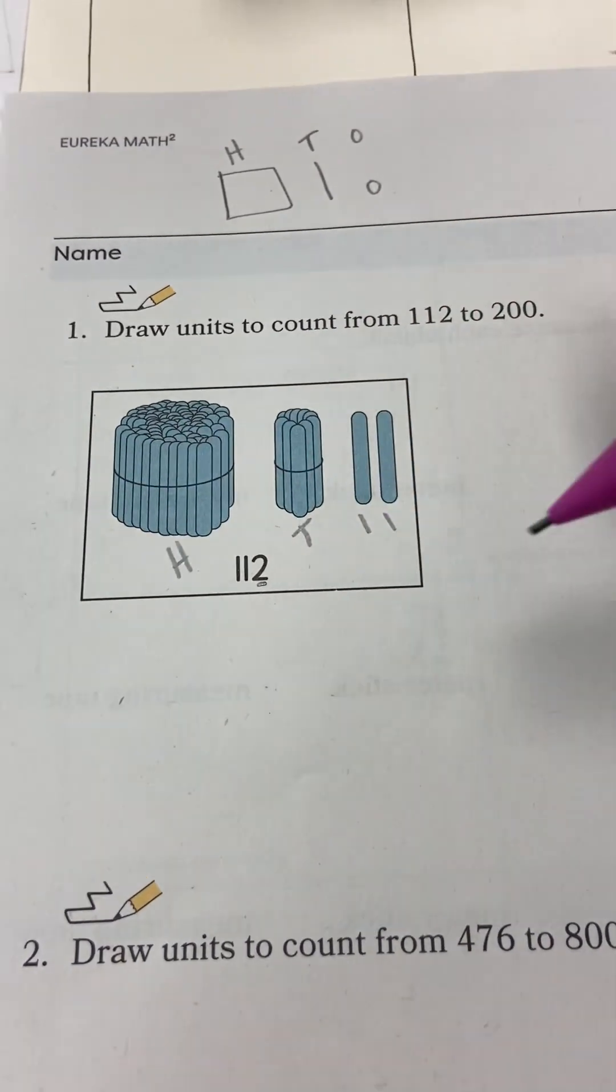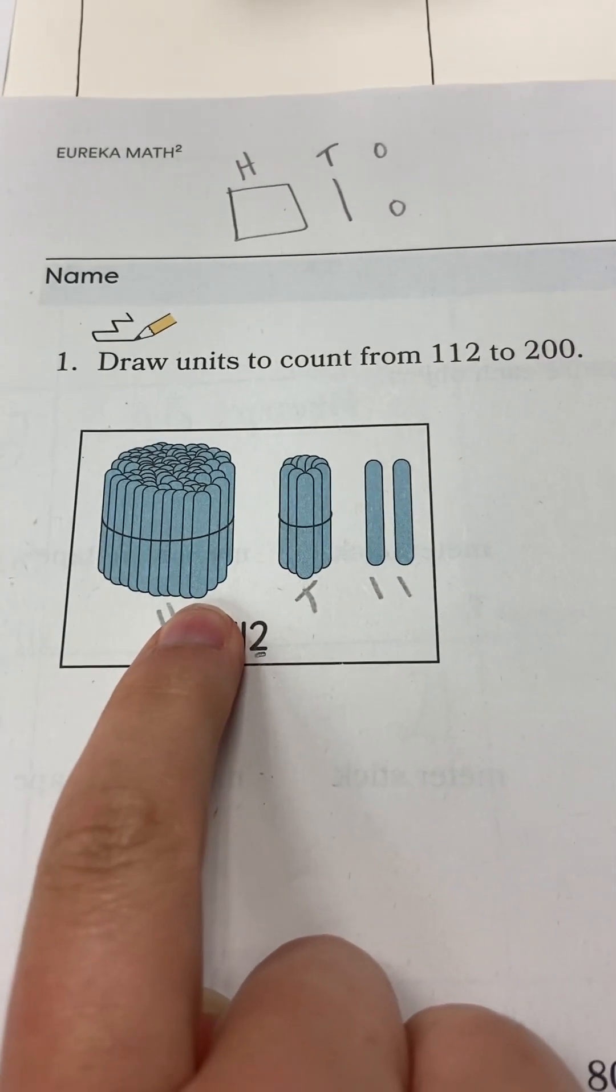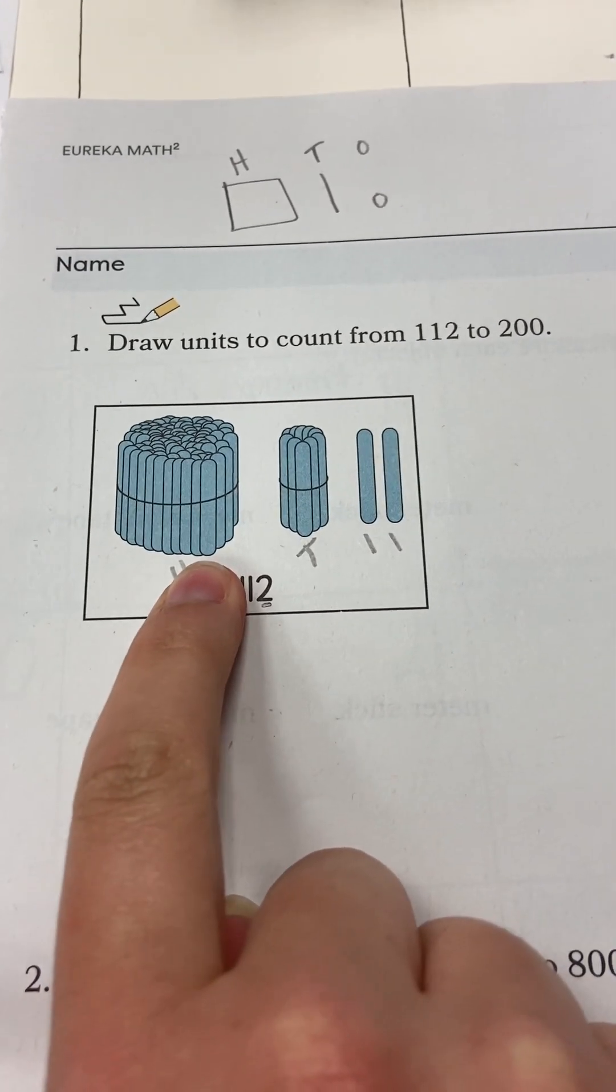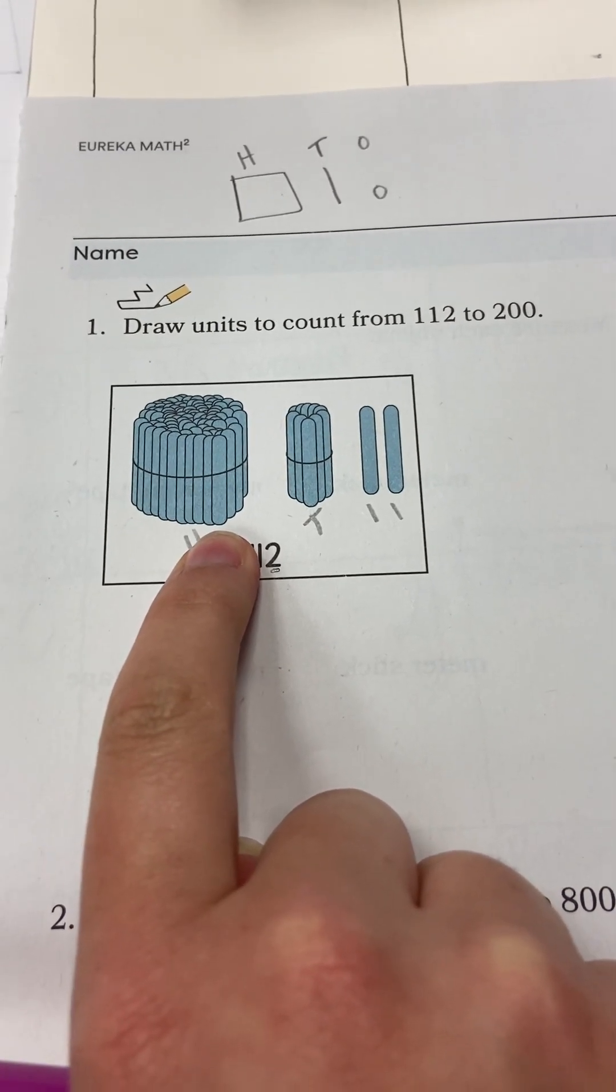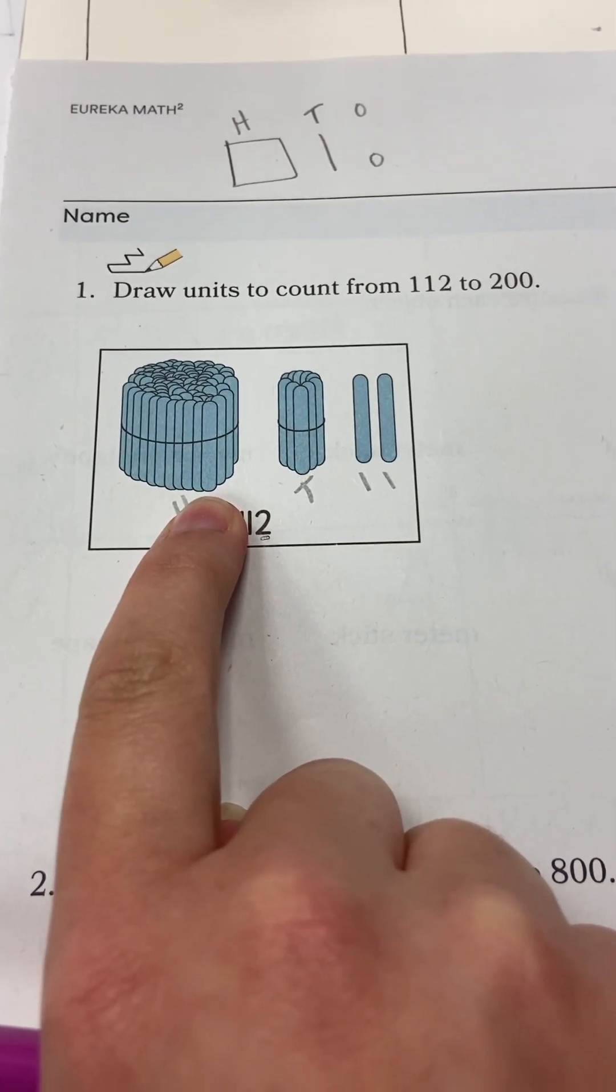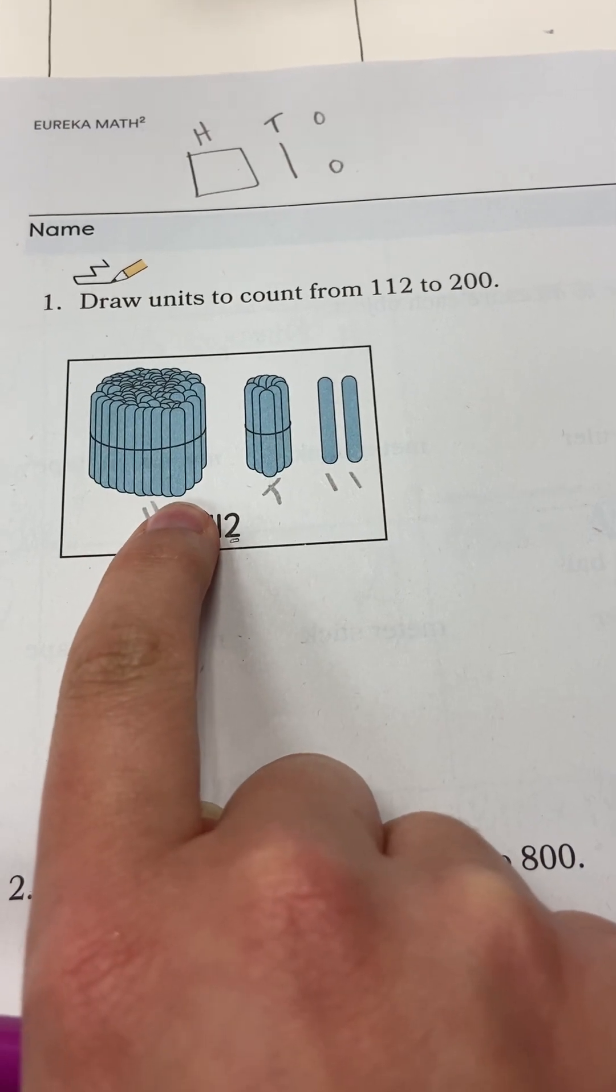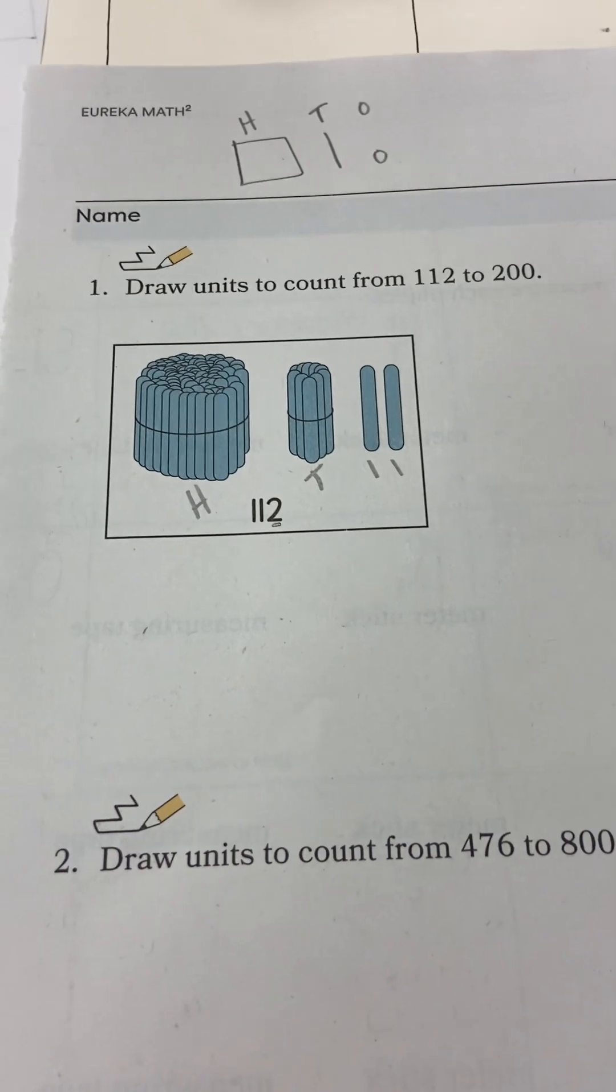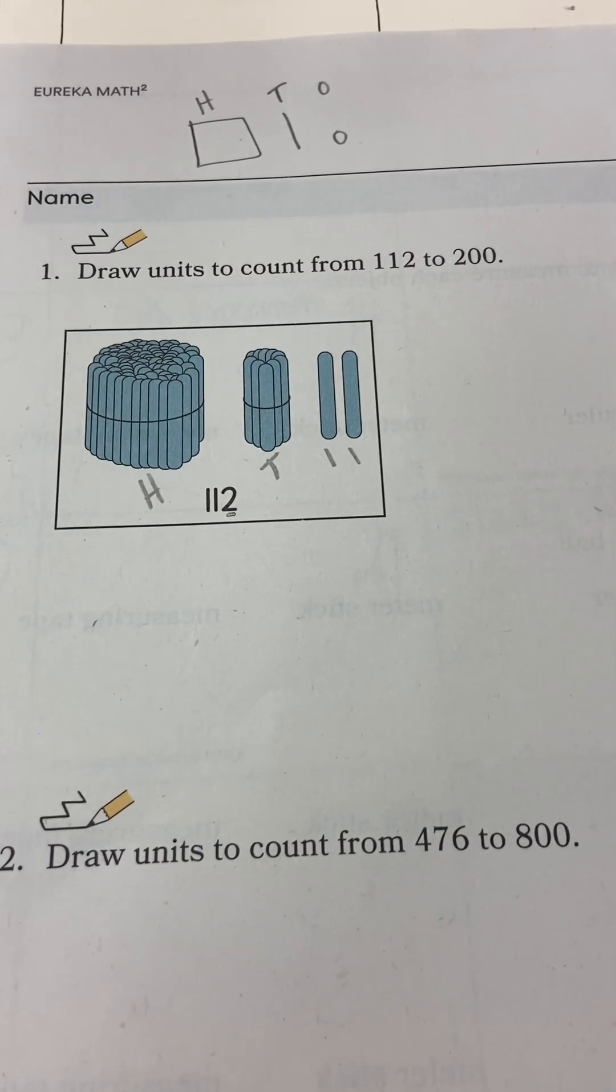So when they are doing this, I ask them to cover up the 100. I say, what number do you see? They say 12. What 10's number is close to 12? They should be telling you 20. If they don't know, remind them their 10's numbers: 10, 20, 30, 40. What number is close to 12? They should say 20. If they don't say that, please lead them to that answer by starting at 12 and counting up until they get to a 10's number.